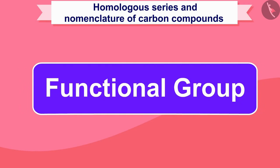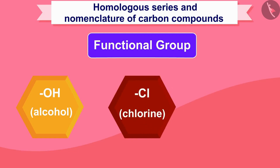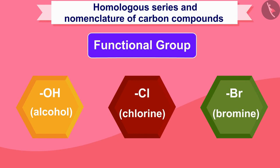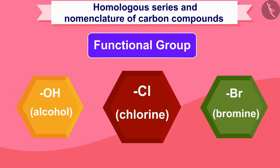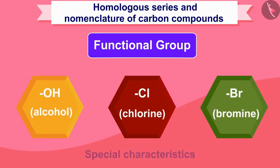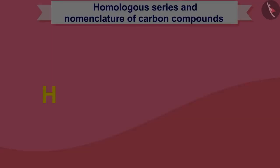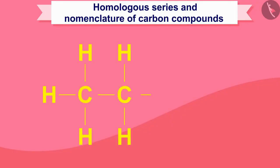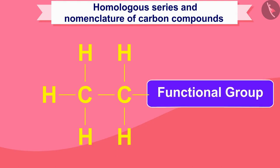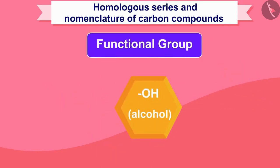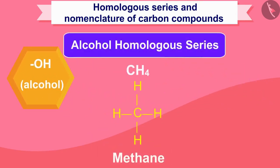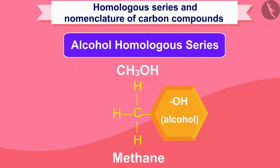Let us now understand what a functional group is — such as OH (alcohol), Cl (chlorine), Br (bromine), etc. This functional group gives compounds special characteristics. When another group displaces a hydrogen inside a hydrocarbon, it is called a functional group. For example, take alcohol, OH.